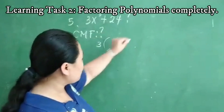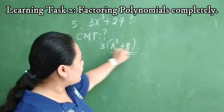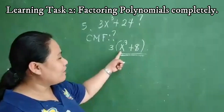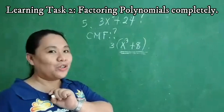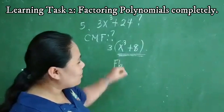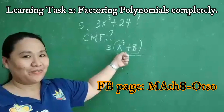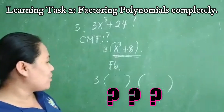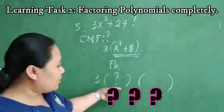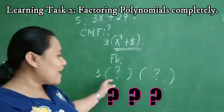Then the remaining factors are x cubed plus 8. What can you say about the given binomial? x cubed plus 8 — that is the sum of 2 cubes. You can now visit our FB page, Mat 8-8-8, to learn how to factor out the sum of 2 cubes. What will be the factored form of the given expression? Of course, the first is the binomial, and the second will be the trinomial. Can you guess the answers?